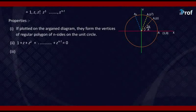And the third, their product: 1 × z × z² × ... × z^(n-1) will become (-1)^(n-1). These are the three important properties of the nth roots of unity.